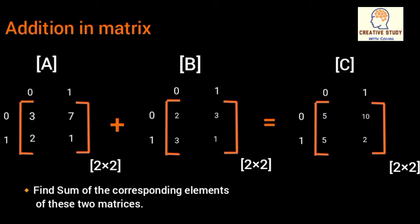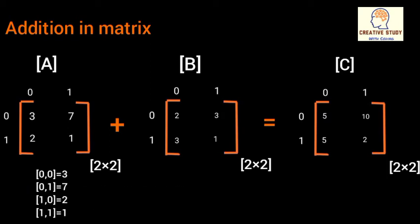In matrix A, at index [0,0] value is 3, and at [0,1] value is 7. And at index [1,0] value is 2, and at index [1,1] value is 1.